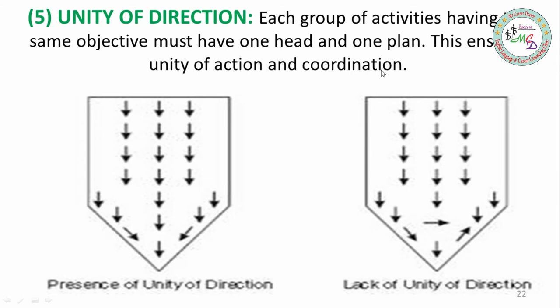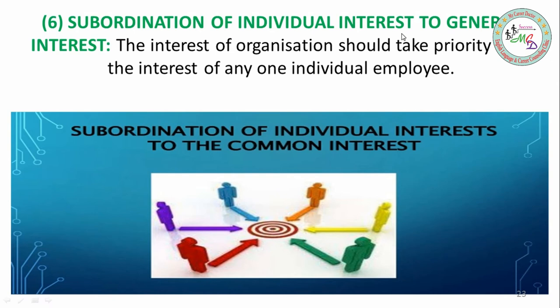Looking at the picture: presence of unity of direction means everyone moves in one direction, while lack of unity of direction means people go in different directions, which impacts productivity and production. Next, Subordination of Individual Interest to General Interest - every individual in the organization has different interests, but the organization's interest should take priority and be on top. If individual interests are prioritized, the organizational objective cannot be met.